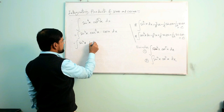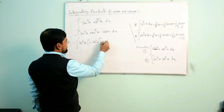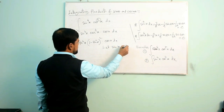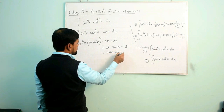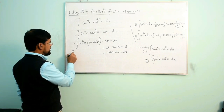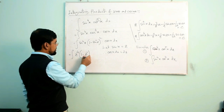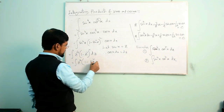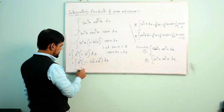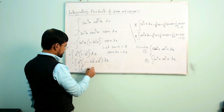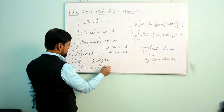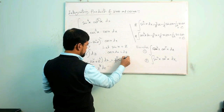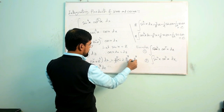We replace cos⁴x using cos²x = 1 − sin²x, giving (1 − sin²x)² · cos x dx. Now we use the method of substitution: let sin x = z, so cos x dx = dz. The integral becomes ∫z⁴(1 − z²)² dz, which expands to ∫z⁴(1 − 2z² + z⁴) dz. Integrating term by term gives z⁵/5 minus 2z⁷/7 plus z⁹/9 plus C.